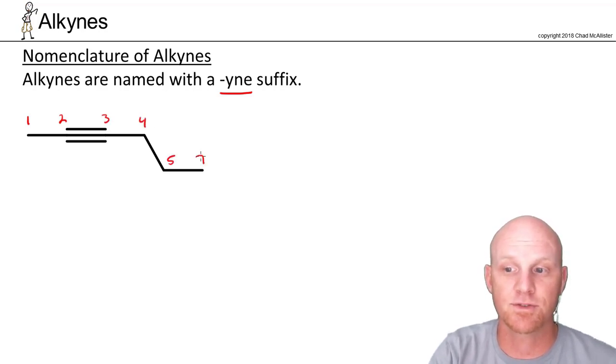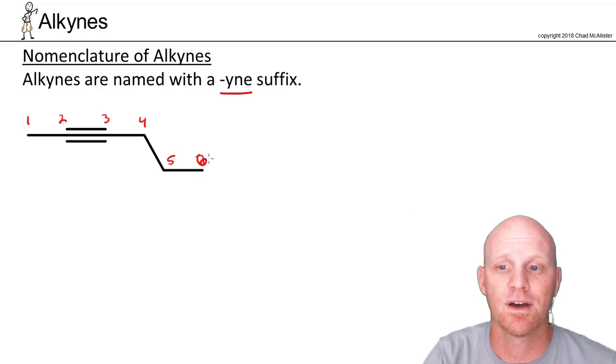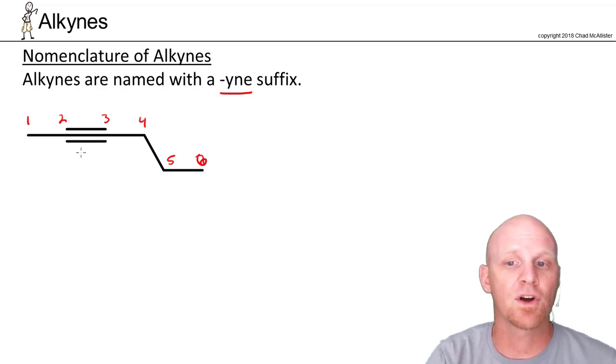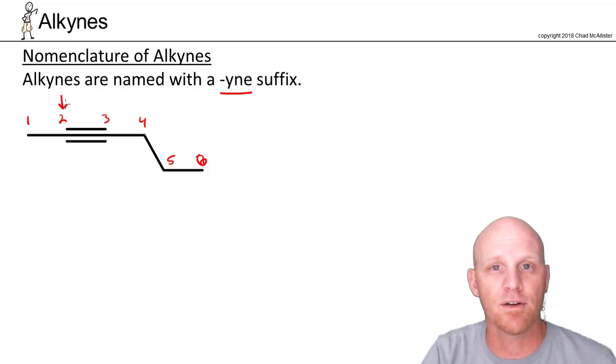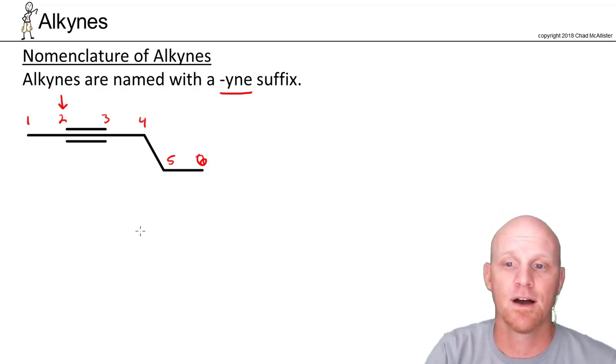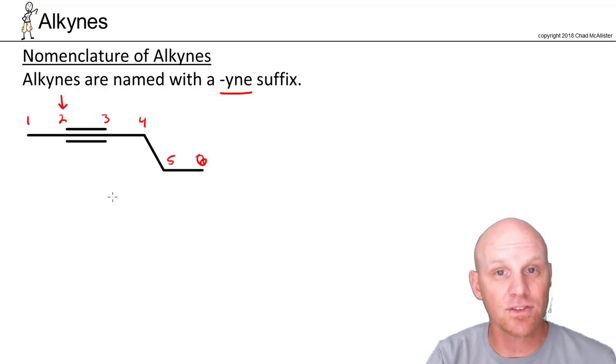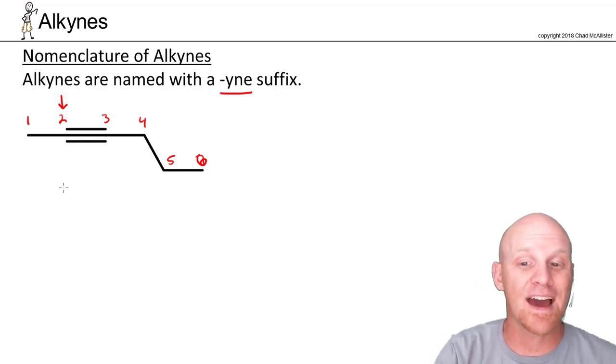In this case, we've got a six-carbon chain, and we can see the triple bond is between carbons two and three. Just like with alkenes, we'll give it the lower of the two numbers for its chain locator. So six carbons is hex, and instead of saying hexane, we're going to say hexyne.